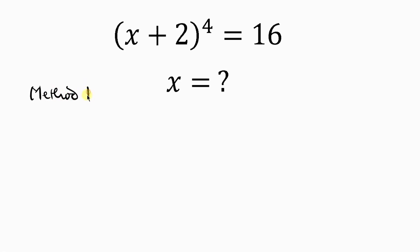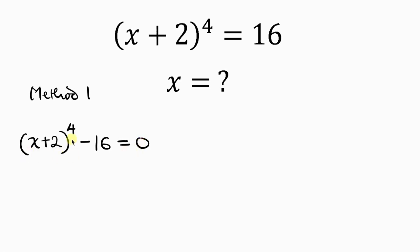So now let's go to Method 1. Our first step will be to move 16 to the left hand side. We already have (x + 2)^4 on the left; as 16 crosses to the left it becomes minus 16, and this is equal to zero. Now this expression can be written as (x + 2) raised to the power of 2 times 2, minus 16, equal to zero.